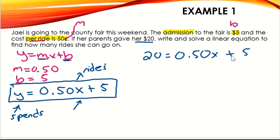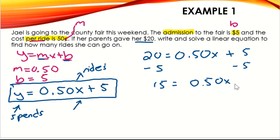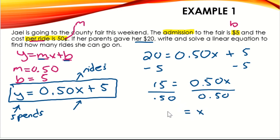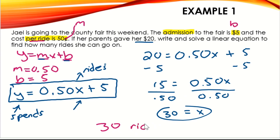We solve for x. It's a two-step equation: subtract 5 to get 15, leaving 0.50x. Then divide both sides by 0.50. Fifteen divided by 0.50 is 30. So x equals 30 — she can ride 30 rides with $20 at this cost.